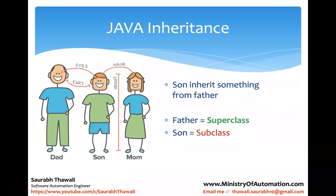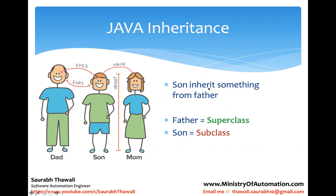Today's topic is Java inheritance. Let me try to relate it with a real-world example. I'll highlight one family where a son is inheriting some qualities from his father - let's say he inherits eyes and ears from dad, while his hair and height are like his mom. So there are qualities inherited from the father and qualities inherited from the mother. We know what inheritance means in real life.